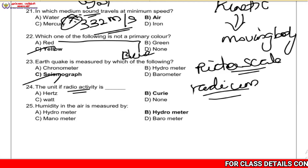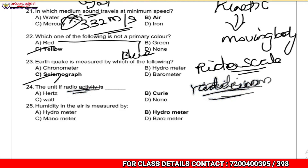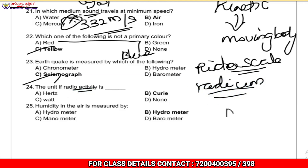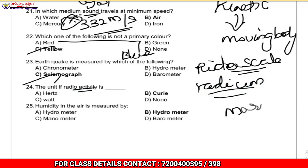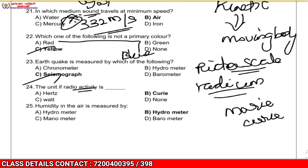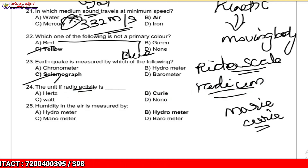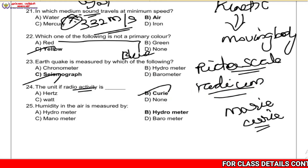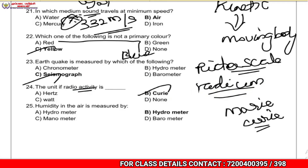The unit of radioactivity is the Curie, named after Marie Curie. The unit of X-ray is the Röntgen.